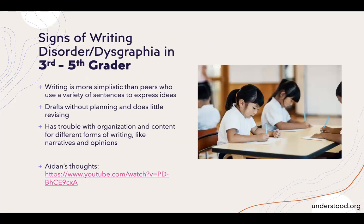In the third through fifth grade range, signs of a writing disorder include demonstrating more simplistic writing compared to peers, not using a variety of sentences to express ideas, doing drafts without any planning, not revising writing even when instructed or guided to do so, and having trouble organizing their writing and content for different kinds of writing such as narratives and opinion pieces.